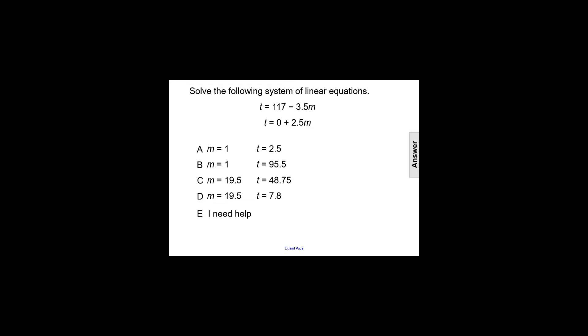The best way to solve this system, or the quickest and most efficient way, would be to use substitution. We have the variable t solved for in both equations, so we can take one of the equation's expression for t and substitute it into the other equation. Here, we'll take the second expression for t, 0 plus 2.5m, and we'll substitute that into the first equation.